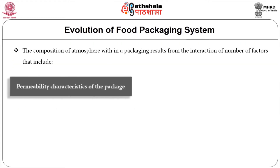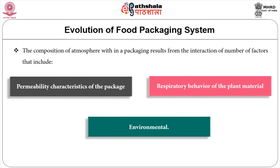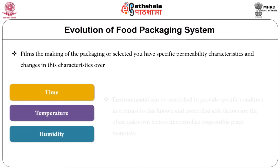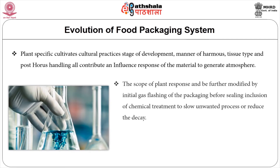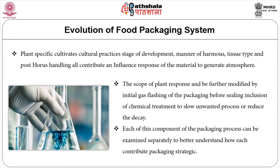The composition of the atmosphere within a package results from the interaction of a number of factors, including the permeability characteristics of the package, the respiratory behavior of the plant material, and the environment. The films making up the packaging are selected to have specific permeability characteristics, and changes in these characteristics over time, temperature, and humidity follow known physical laws. The environment can be controlled to provide specific conditions. In contrast, the often unknown and uncontrollable responses of the plant material — including specific cultivars, cultural practices, stage of development, manner of harvest, tissue type, and post-harvest handling — all contribute and influence the response of the material to the generated atmosphere.